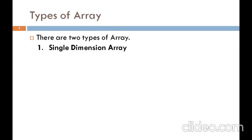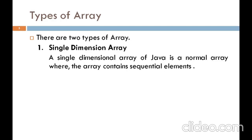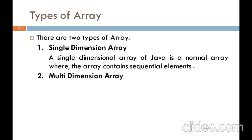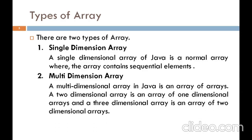Based on the types of array, we can define the structure. The first type is a single-dimensional array — a normal array where elements are sequential. The index compulsorily starts from 0 and ends at array size minus 1. The second type is a multidimensional array, which is nothing but an array of arrays. It contains two types: 2D array and 3D array. A matrix is an example of a 2D array. A two-dimensional array is an array of one-dimensional arrays, and a three-dimensional array is an array of two-dimensional arrays.